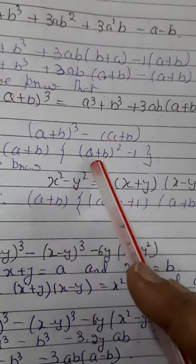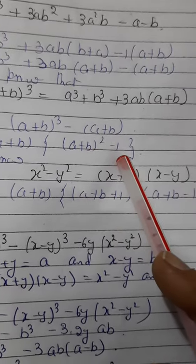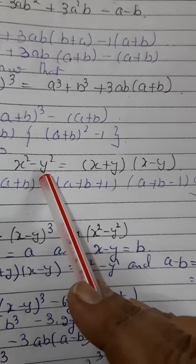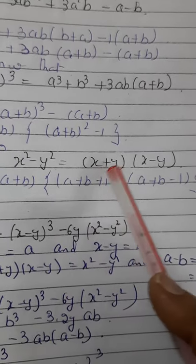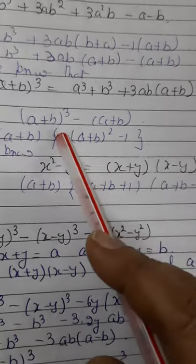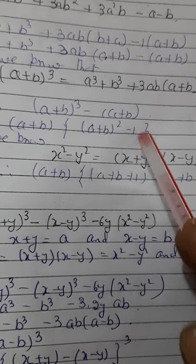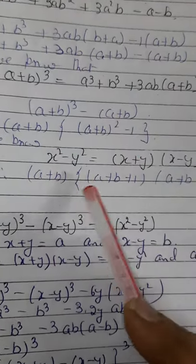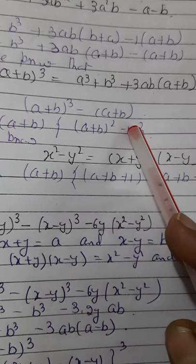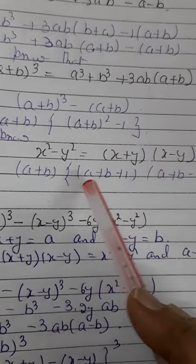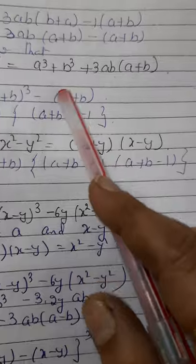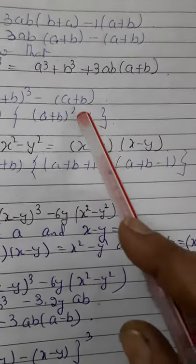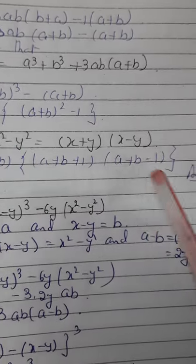Now we will apply the formula x² - y² = (x + y)(x - y). So here x is (a + b) and y is 1. So it becomes (a + b + 1)(a + b - 1). This is the answer to this question.